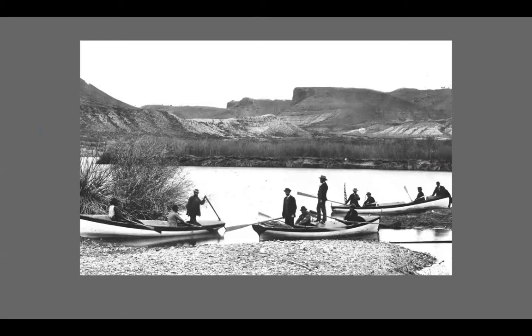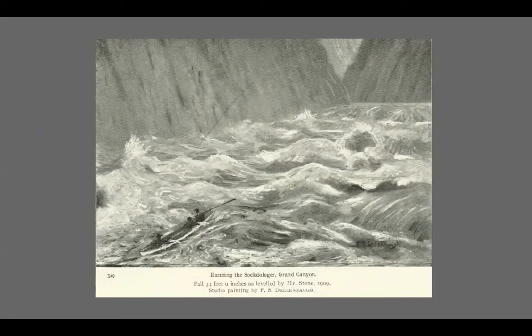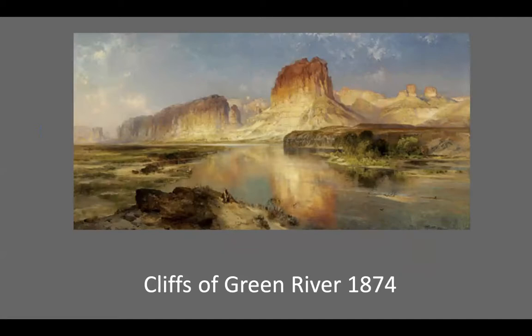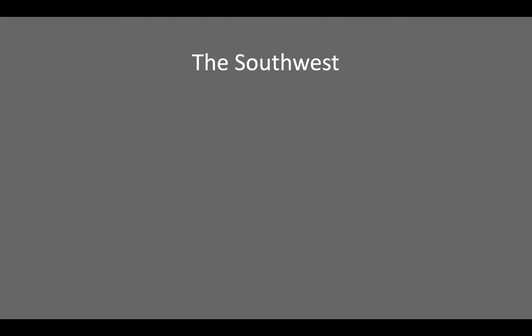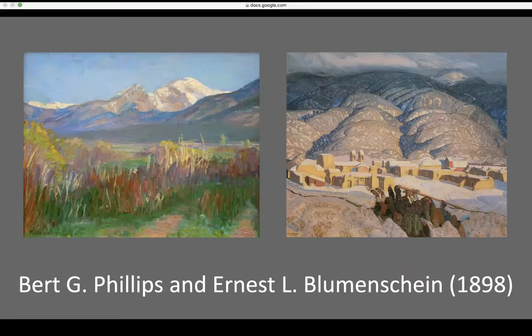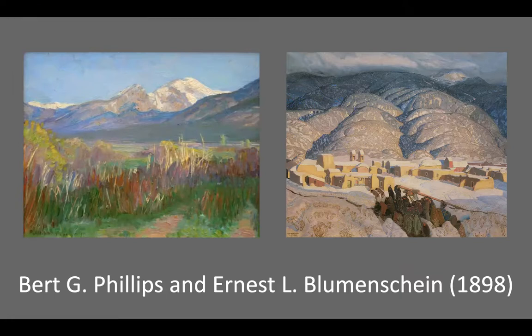Here's Thomas Moran, a young Paiute, and Colburn, another explorer — close to the Green River. They went all the way down the Green River, down the Colorado, where the Green River meets the Colorado near the Moab area. Now we're moving into the Southwest. These two painters were traveling from the East to the West, and their story is really significant to western landscape painting.